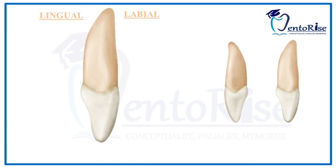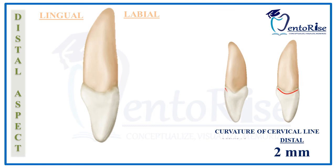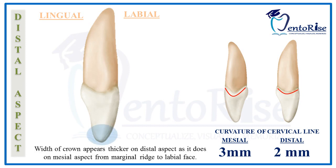Moving to the distal aspect of a permanent maxillary lateral incisor, compared to the mesial aspect there are two differences. First, the curvature of the cervical line on the distal aspect is less than on the mesial aspect. Second, in the incisal third of the crown, the width of the crown appears thicker on the distal aspect compared to the mesial aspect.